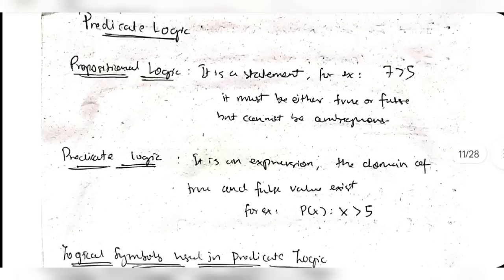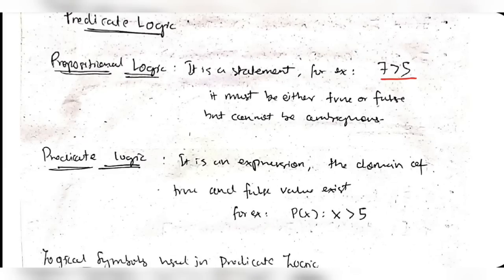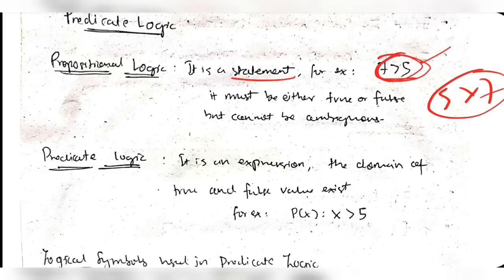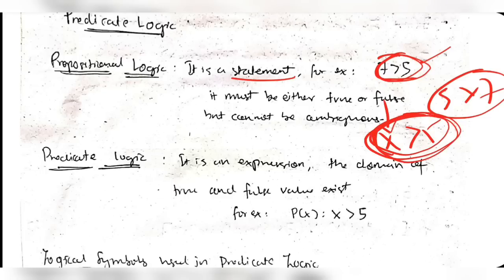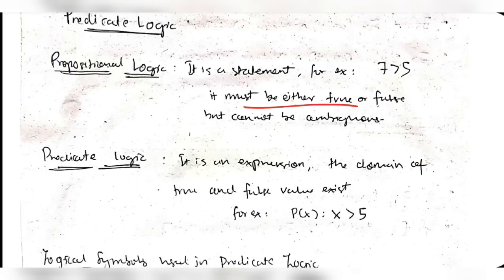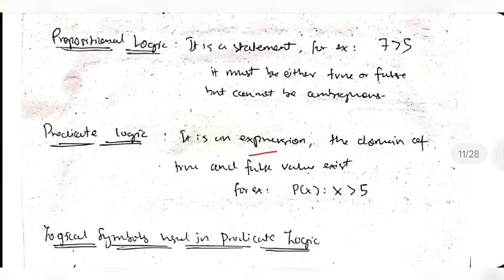Propositional logic: if I say '7 is greater than 5,' that is a statement you know for sure is true. When you have a value for which you know for certain it is true or false - like '5 is greater than 7' is false - that is propositional logic. It must be either definitively true or definitively false. Predicate logic, on the other hand, is an expression where the truth value depends on a variable - like 'x is greater than 5' - whose truth depends on the value of x.